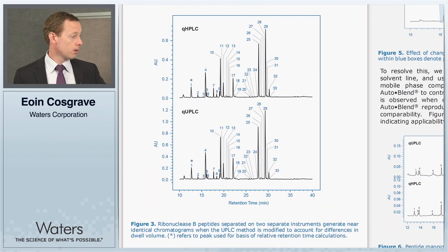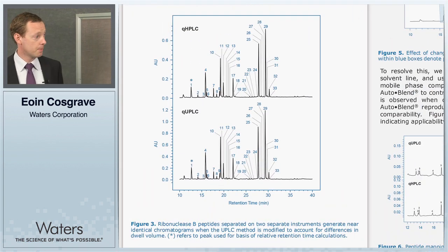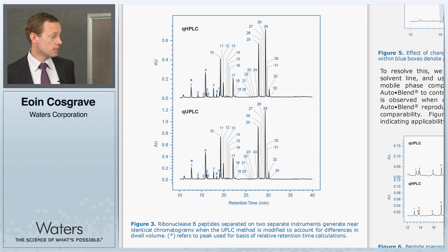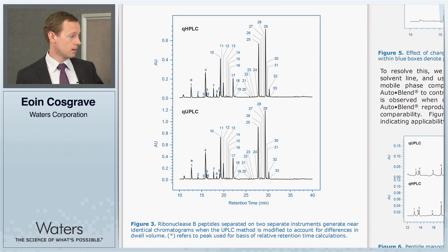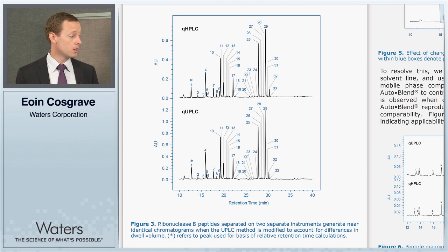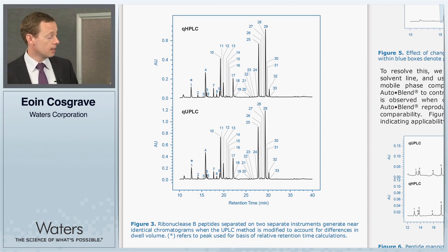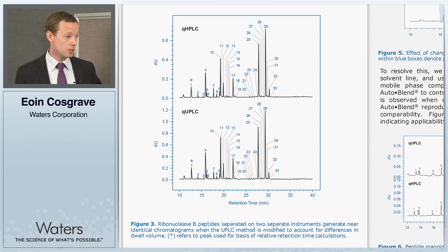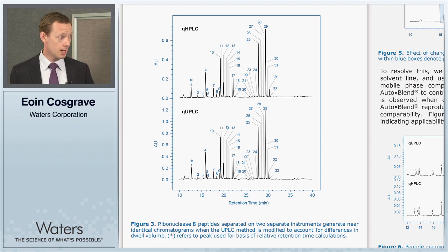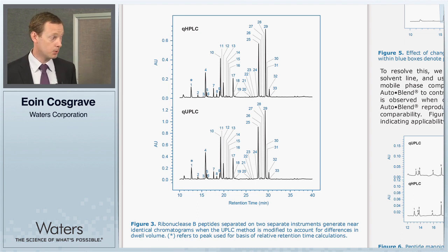In figure three, we decided to test this on a more complex peptide mapping method. To test how this change in the instrument method would work on more complicated samples, we trypsinized ribonuclease B and ran that tryptic digest using the HPLC method. This is really a challenge to the method to see if this gradient offset can work on more complicated samples.